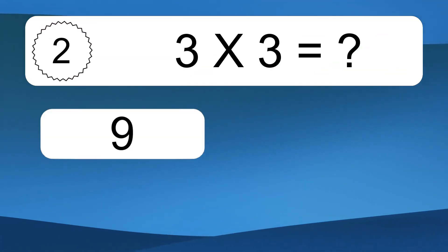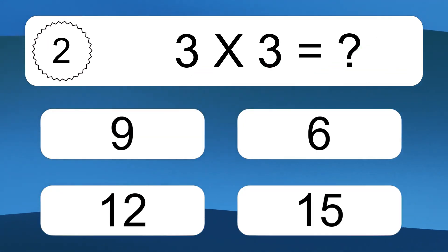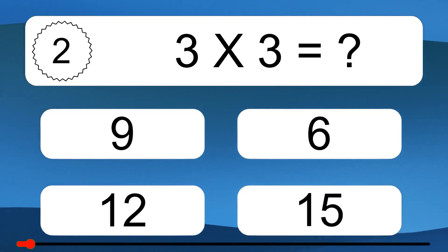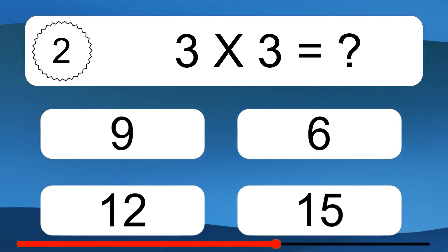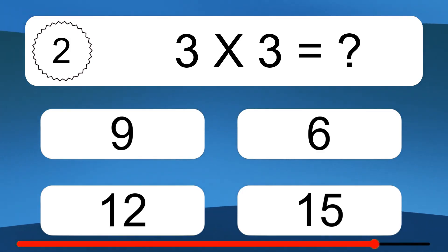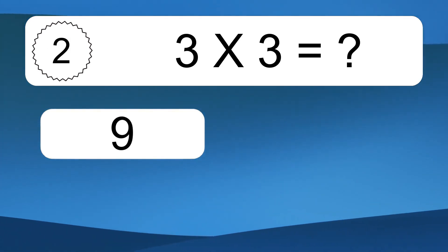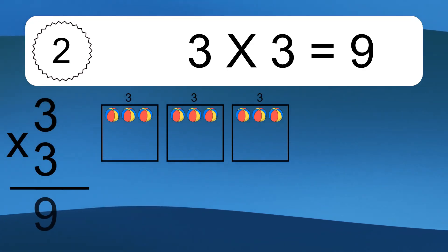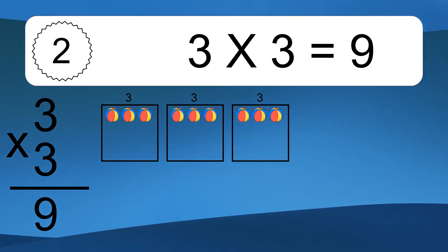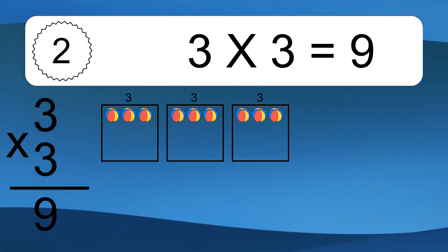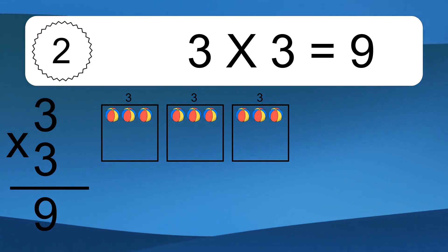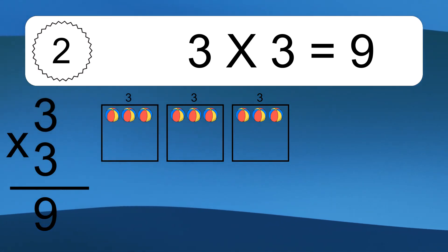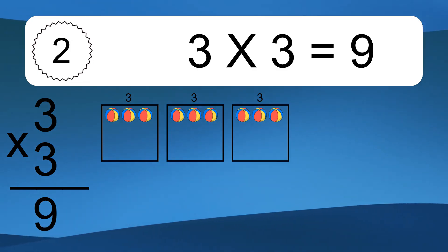3 times 3 equals what? 3 times 3 equals 9. We have 3 boxes, and each box has 3 colorful balls inside. If you count all the balls in all the boxes together, you will have 3 times 3 balls.